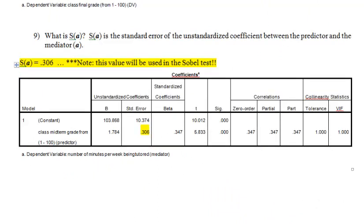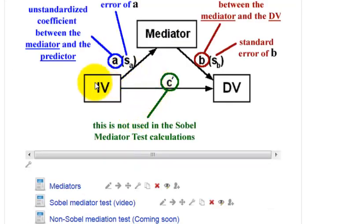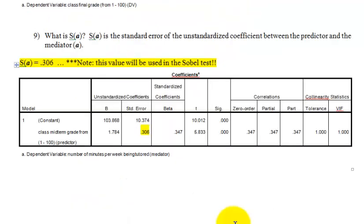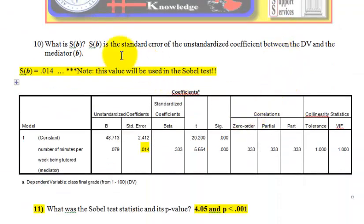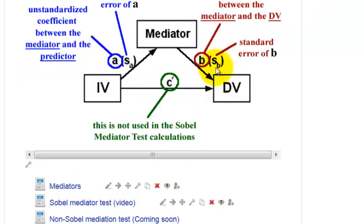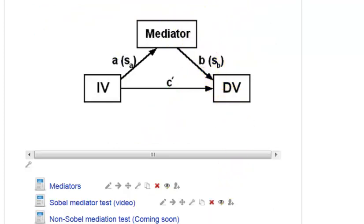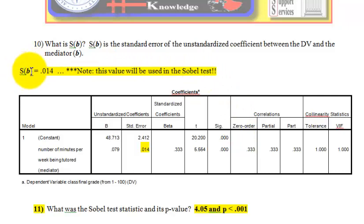Number nine: what is SA? SA is the standard error of A — that's the relationship between the predictor and the mediator. We go back to the same coefficients box we used to find A, and the standard error of A is right there. You'll use that number in the Sobel test. Number ten: what is SB? SB is the standard error of B, which is between the mediator and the DV. Again, we'll use these numbers in the Sobel test.